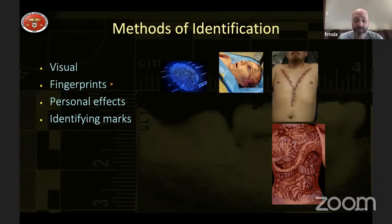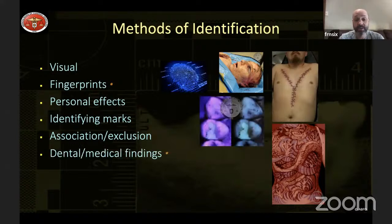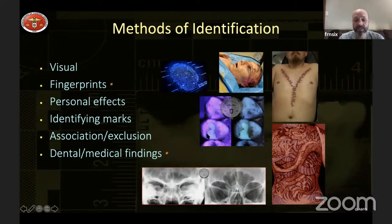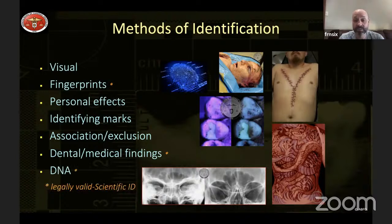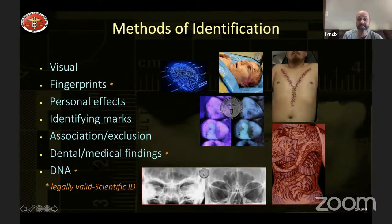Association exclusion — were they with certain people, were they in a car — and dental and medical findings are other methods. We can look at teeth, restorations, and use different light sources like UV light to make fillings show up. The maxillary or frontal sinuses are also nearly unique like fingerprints and can be compared. Finally, DNA is also used and is becoming cheaper and faster, but of all methods, only three are considered legally balanced scientific identifications.